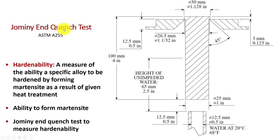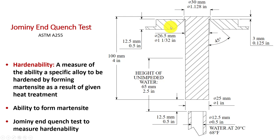We do this with the Jominy end-quench test. Here's the ASTM standard — you may want to look that up. We have a sample that is four inches long, one inch in diameter. We're going to put it in a test stand that minimizes contact for heat flow from the sample to the test stand. We're going to spray water on that sample at the bottom — water on a half inch ID nozzle coming up.